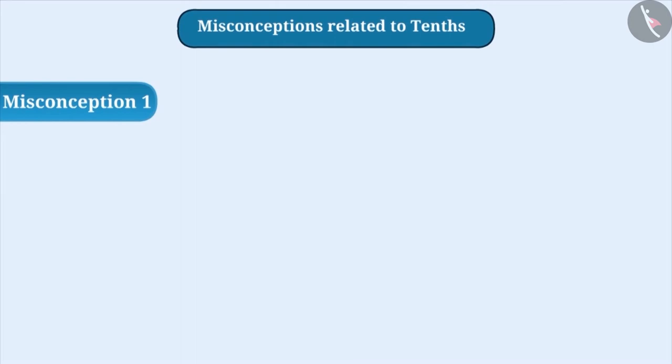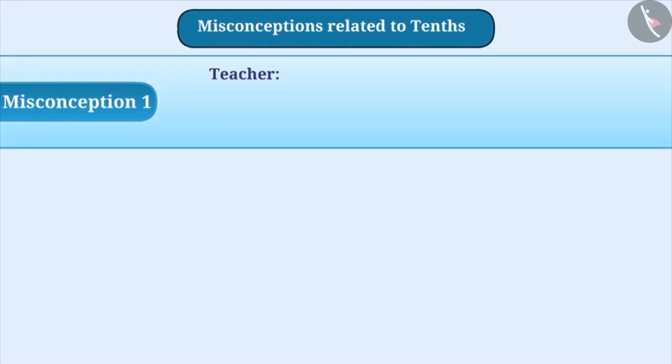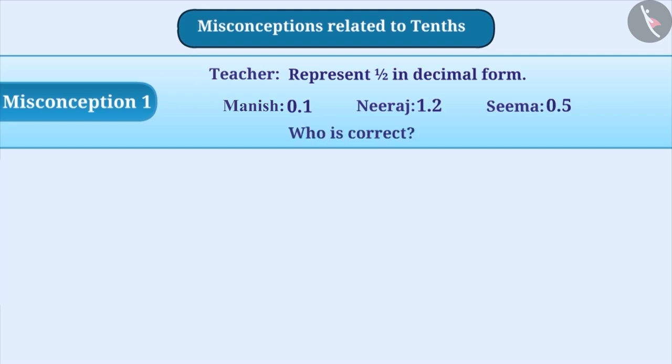Misconception 1: One day, the teacher asked the students to represent 1 by 2 in decimal form. Manish wrote the decimal form of 1 by 2 as 0.1, Neeraj wrote it as 1.2, and Seema wrote it as 0.5. Identify who is correct among the three.